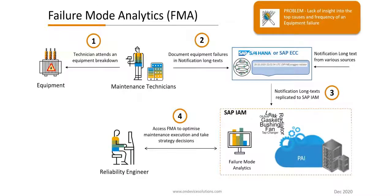This use case showcases how failure mode analytics powered by SAP Intelligent Asset Management can help address this problem. In the event of a breakdown or a functional failure of an equipment, a maintenance technician is tasked to restore the equipment to its working condition. The maintenance technician documents the findings of the problem and the causes in the corrective maintenance notification's long text field.